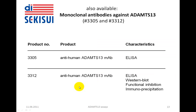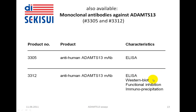Also available from American Diagnostica Sekisui are monoclonal antibodies against ADAMS-13 for research, product numbers 3305 and 3312. There are two different antibodies available, and antibody 3312 can be used for ELISA and Western blot. It is inhibitory for the von Willebrand factor cleaving activity of ADAMS-13, and it allows immunoprecipitation.